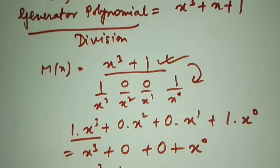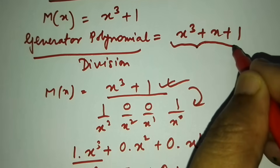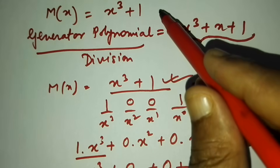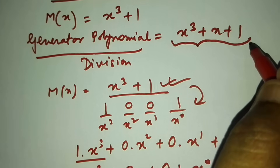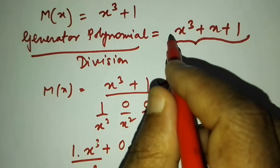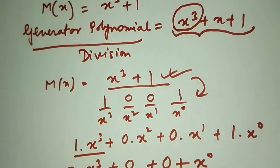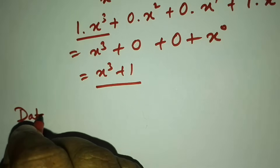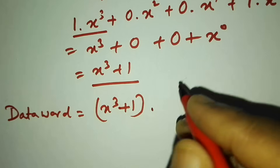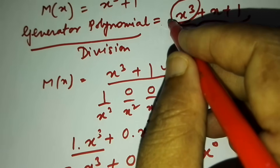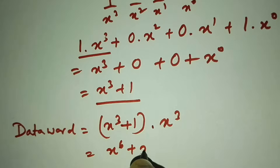In CRC, depending on the number of bits of the divisor, we append zeros to the data word — one bit less than the divisor. But in the case of polynomial, you have to find the order of the divisor, which is x³, and multiply that with your message. So the data word will be equal to (x³ + 1) · x³ = x⁶ + x³.